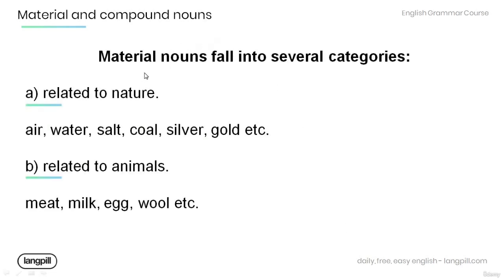Remember, material nouns fall into several categories. A: related to nature — for example, air, water, salt, coal, silver, gold, etc.